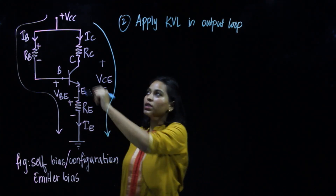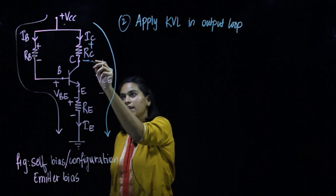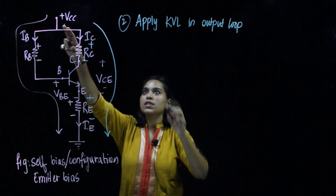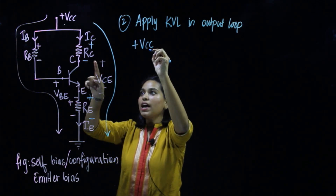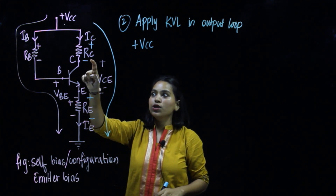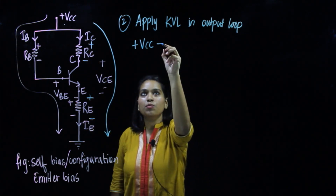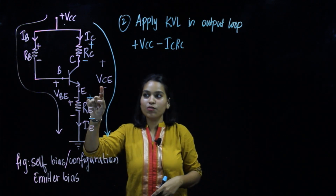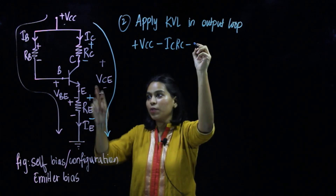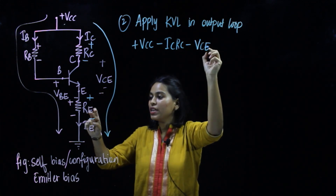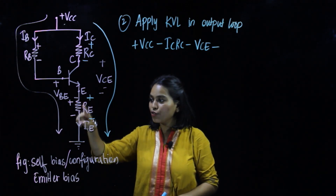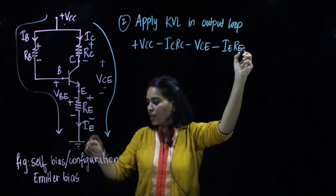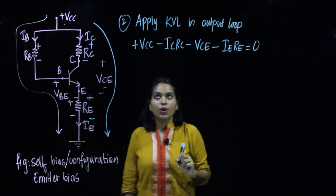Applying KVL on the output loop: since VCC is positive, we write plus VCC. Then the voltage drop across RC is IC·RC, so minus IC·RC. Never forget to include VCE — minus VCE. Finally, the voltage drop across RE is IE·RE, so minus IE·RE, and we reach ground, giving the equation equal to 0.